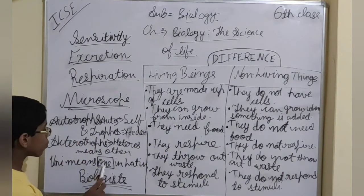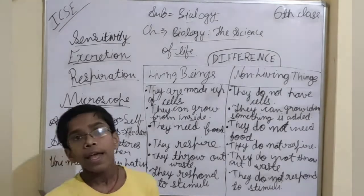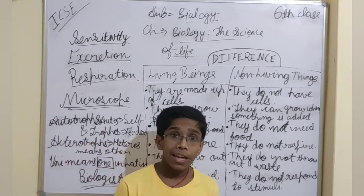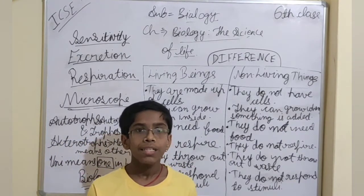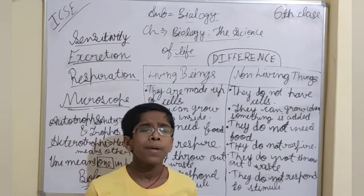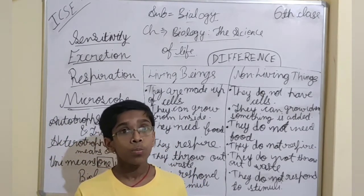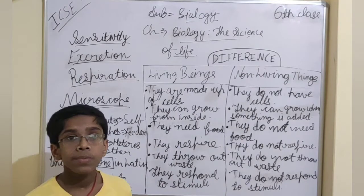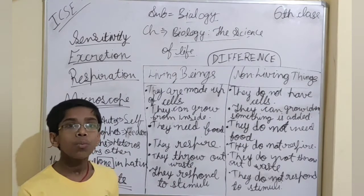Remember, uni means one in Latin, and multi means many. An organism which has a single cell — only one cell, like bacteria — is known as a unicellular organism. An organism which has many cells, like millions and billions of cells, is known as a multicellular organism, like human beings, plants, and animals. Algae and bacteria are unicellular organisms because they have only one cell.